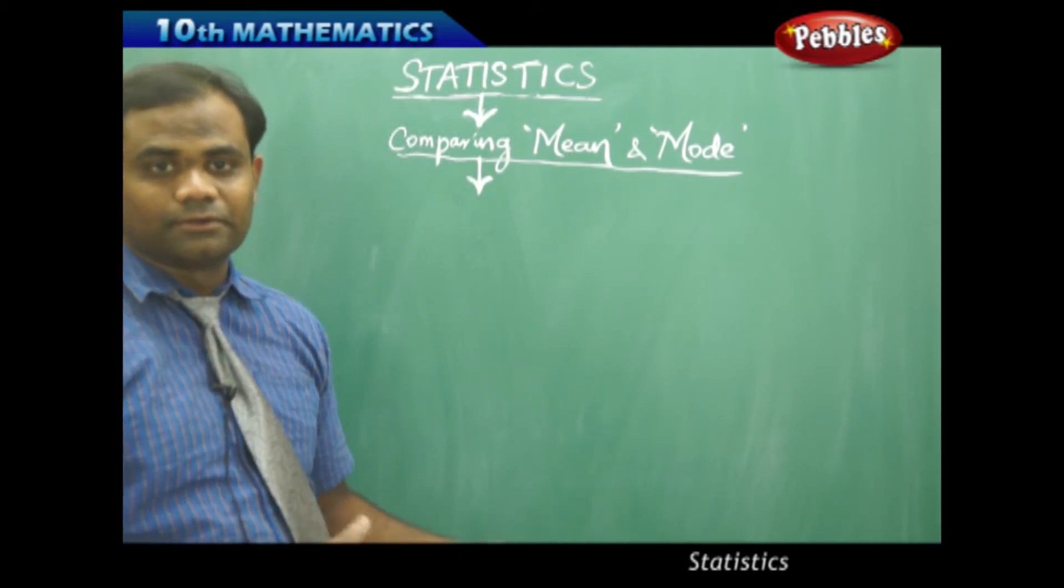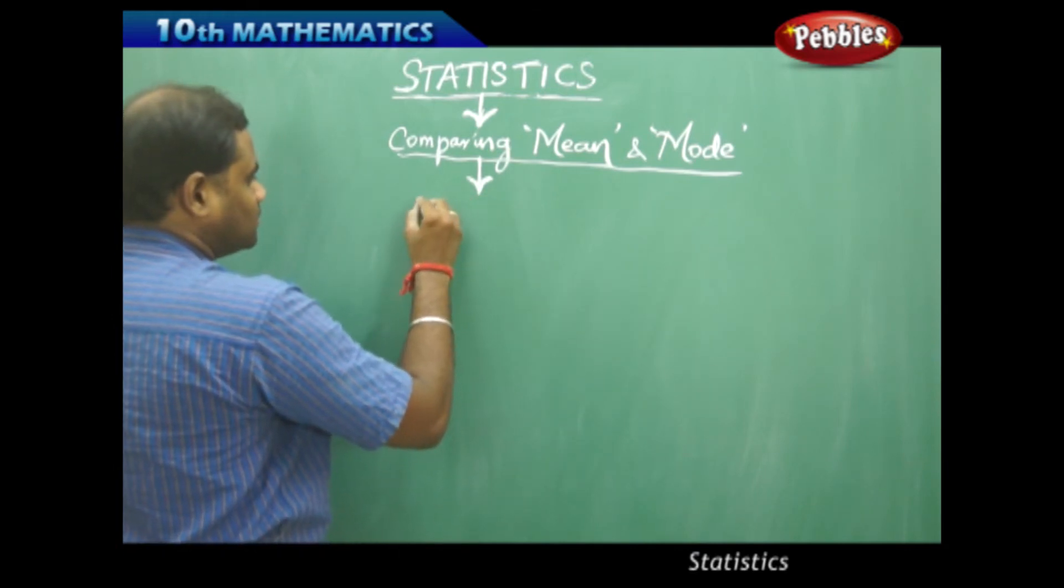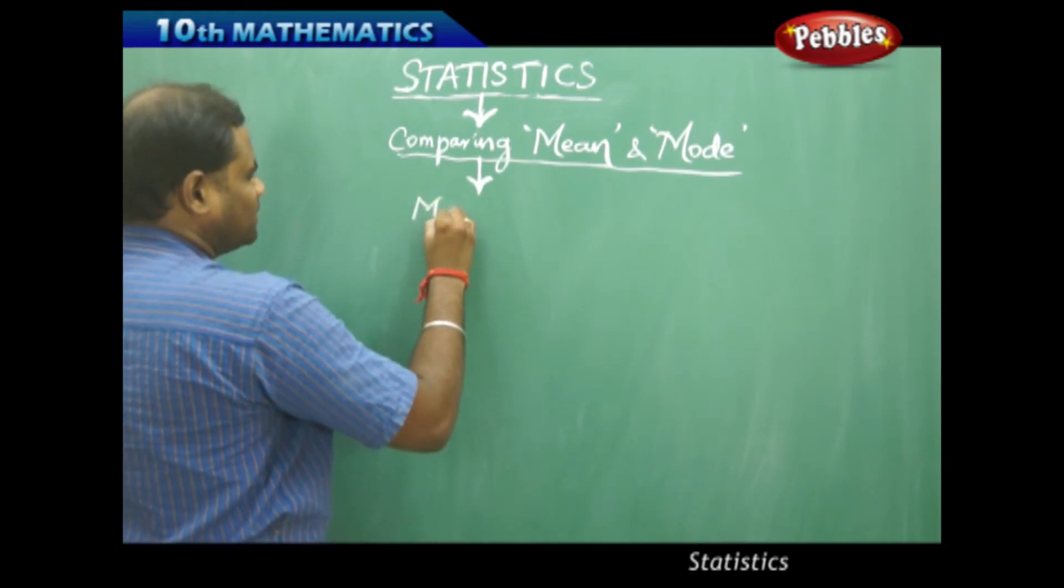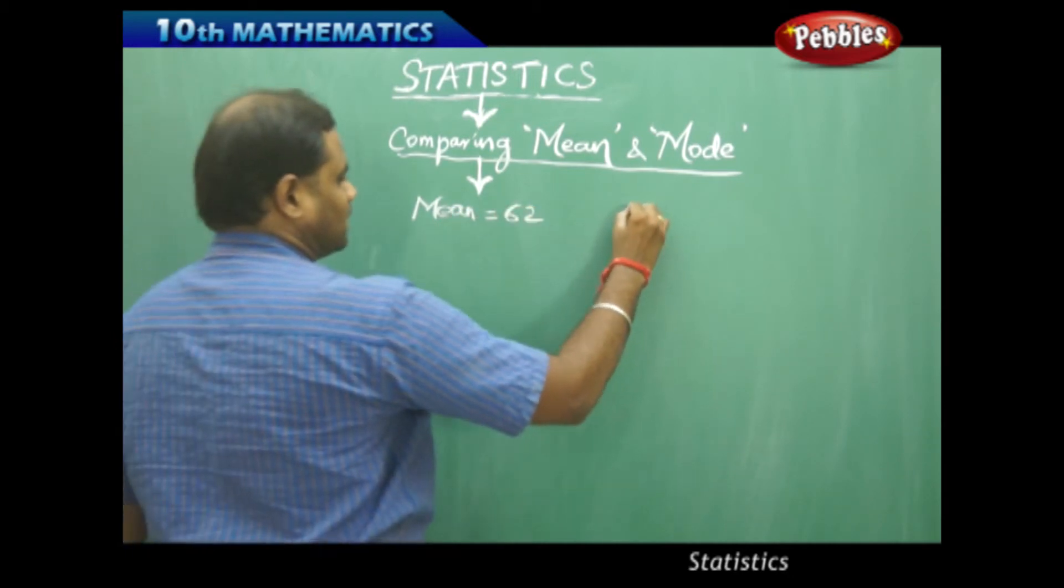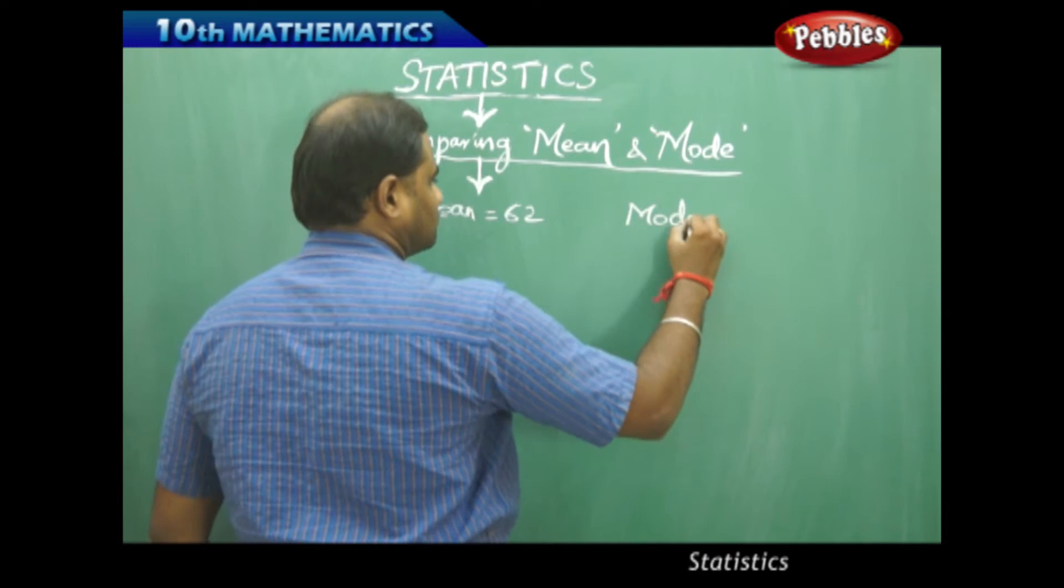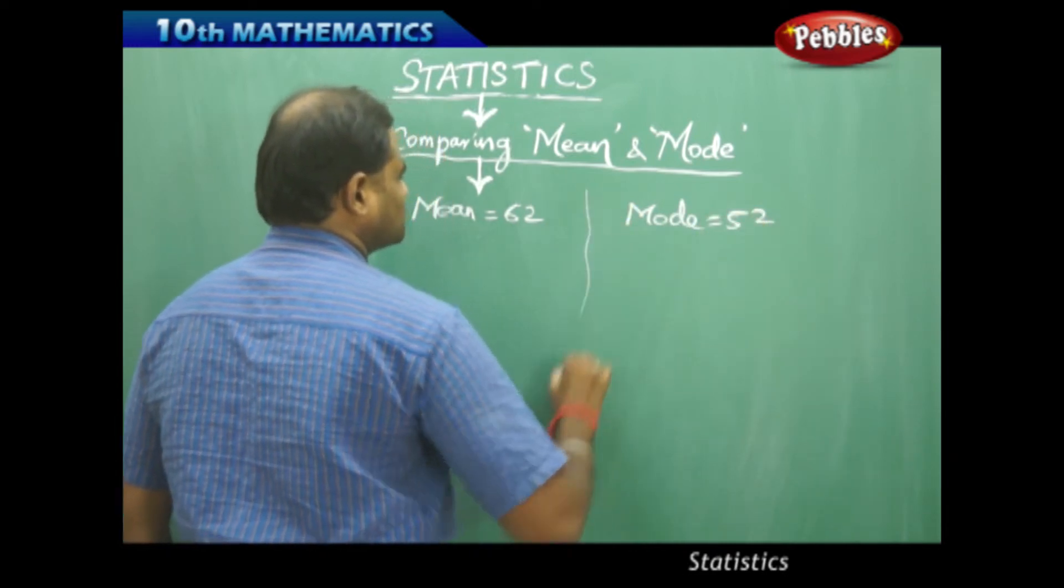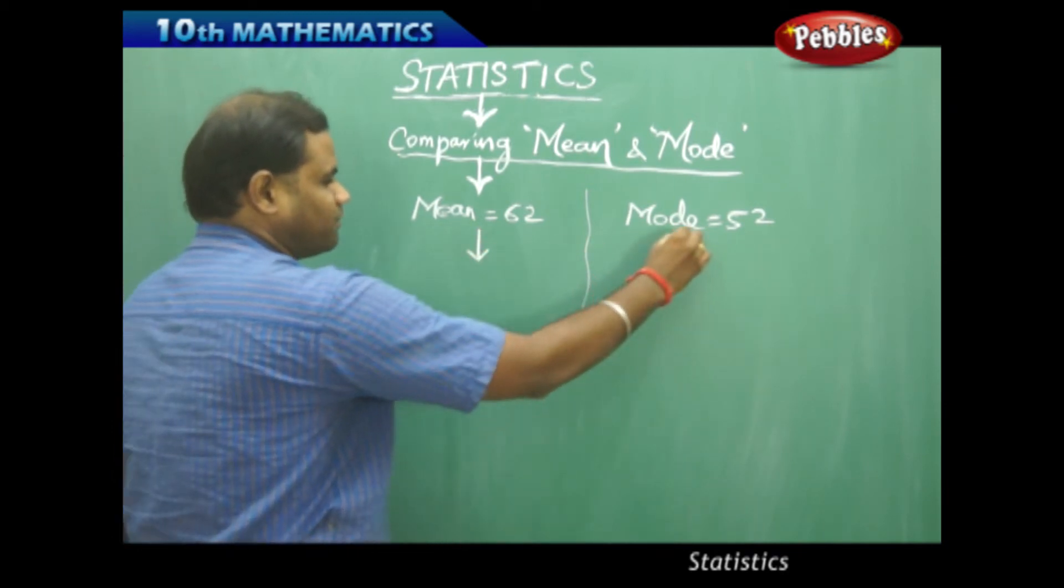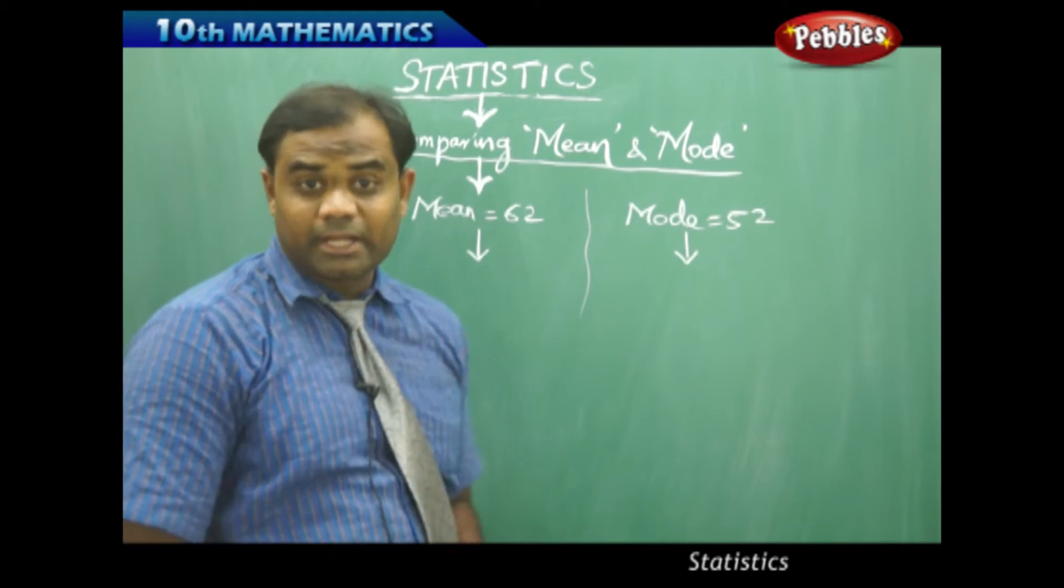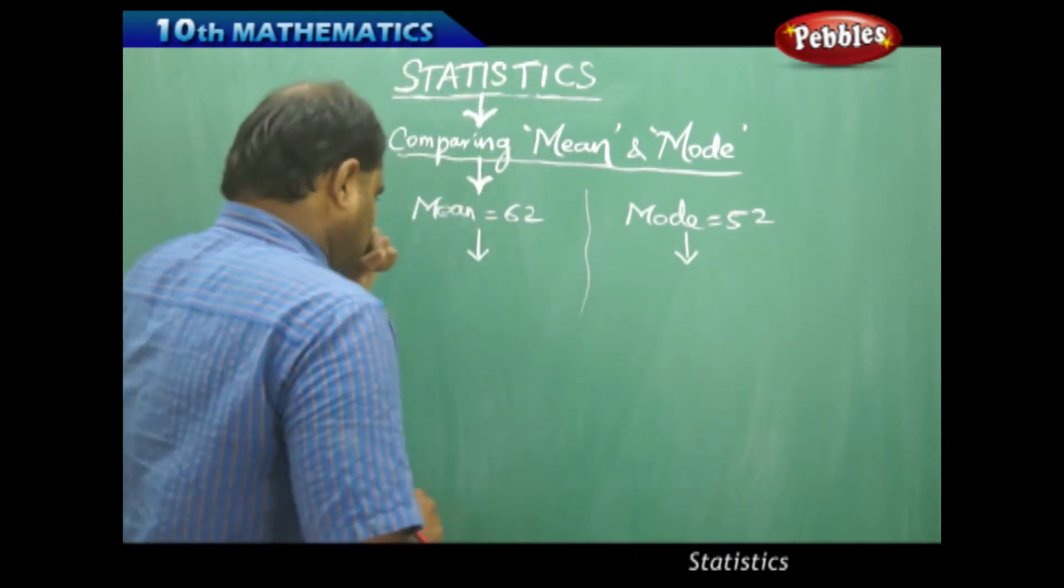As taken from the previous example, I got my mean is 62 and my mode which I obtained as 52. So with these values, I would like to compare because the previous problem was referring to the marks obtained in the subject of mathematics by the students in the class.